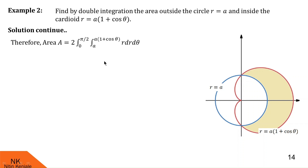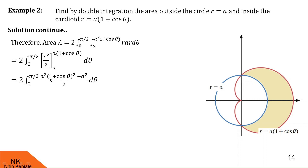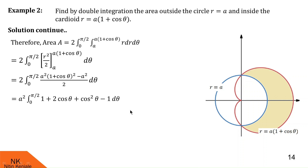Now we proceed with evaluation. The inside integral with respect to r gives r²/2 over the limit a to a(1 + cosθ). Taking 1/2 outside, it cancels with the outside 2. Substituting the limits gives a²(1 + cosθ)² − a². Taking a² common, we have (1 + cosθ)² − 1. Expanding: 1 + 2cosθ + cos²θ − 1 = 2cosθ + cos²θ. For cos²θ we use cos 2θ = 2cos²θ − 1, giving cos²θ = (cos 2θ + 1)/2.